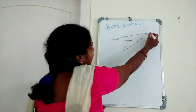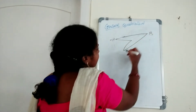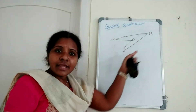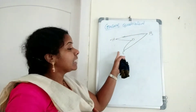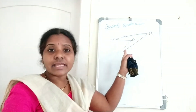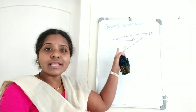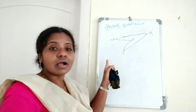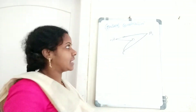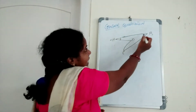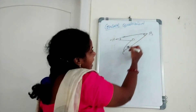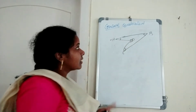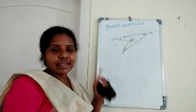Now for the concave quadrilateral — here A, B, C, D is a quadrilateral. In this quadrilateral, one of the interior angles is more than 180 degrees. That quadrilateral is called a concave quadrilateral. Angles A, B, C, and D are the interior angles here.